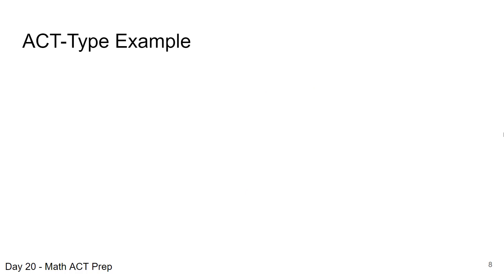Let's take a look at an ACT type example dealing with a matrix. Give this one a try and we'll come back and work it together. The question said if the determinant of the matrix that we're given here is 15, what is X? This particular question did not give us the definition or the formula for finding the determinant. So we need to do that on our own.